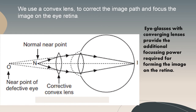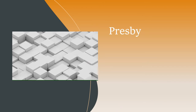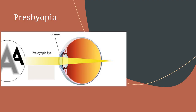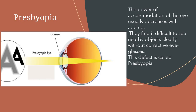Presbyopia is generally believed to stem from a gradual thickening and loss of flexibility of the natural lens inside the eye. The power of accommodation of the eye usually decreases with aging, making it difficult to see nearby objects clearly without corrective eyeglasses. Presbyopia usually begins around age 40, when people experience blurred near vision when reading, sewing, or working at a computer.